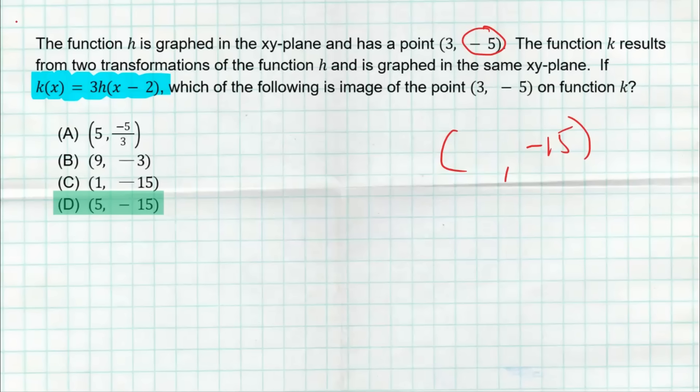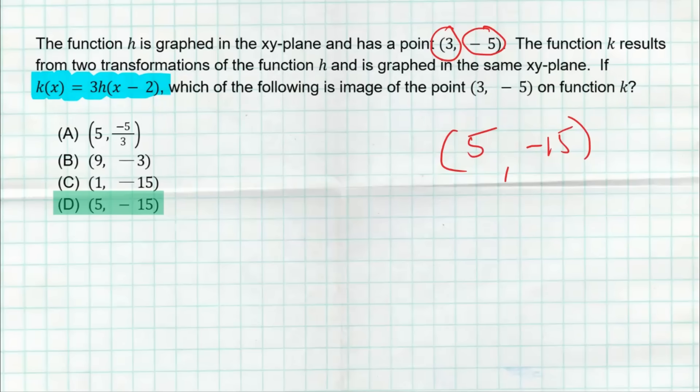So we have to be careful not to subtract two from our X, but we're gonna add two. So if we have the three right here, that was our input, our X value, and we add two, we get five. So that's why our final answer is five, comma negative 15. So be very careful, especially with that inside. A lot of kids will get tricked, and they'll put C as the correct answer because they subtract two, not remembering that that C value on the inside is the opposite of what it says.